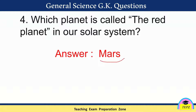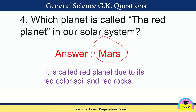Which planet is called the red planet? The answer is Mars. There are many research missions going on to identify whether life is possible on Mars. It is called the red planet due to its red-colored soil and red-colored rocks.